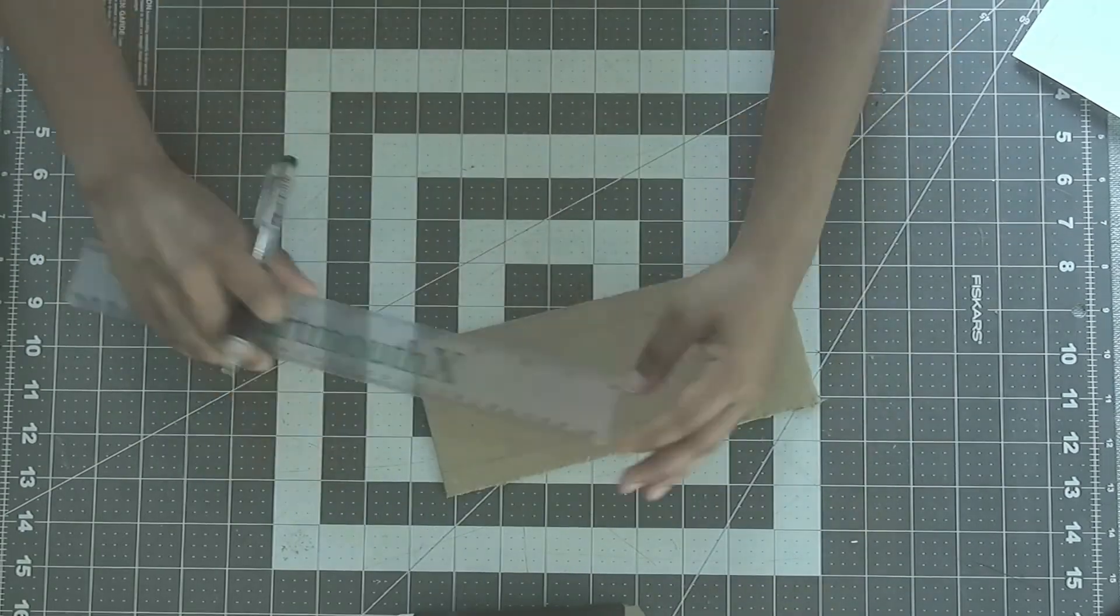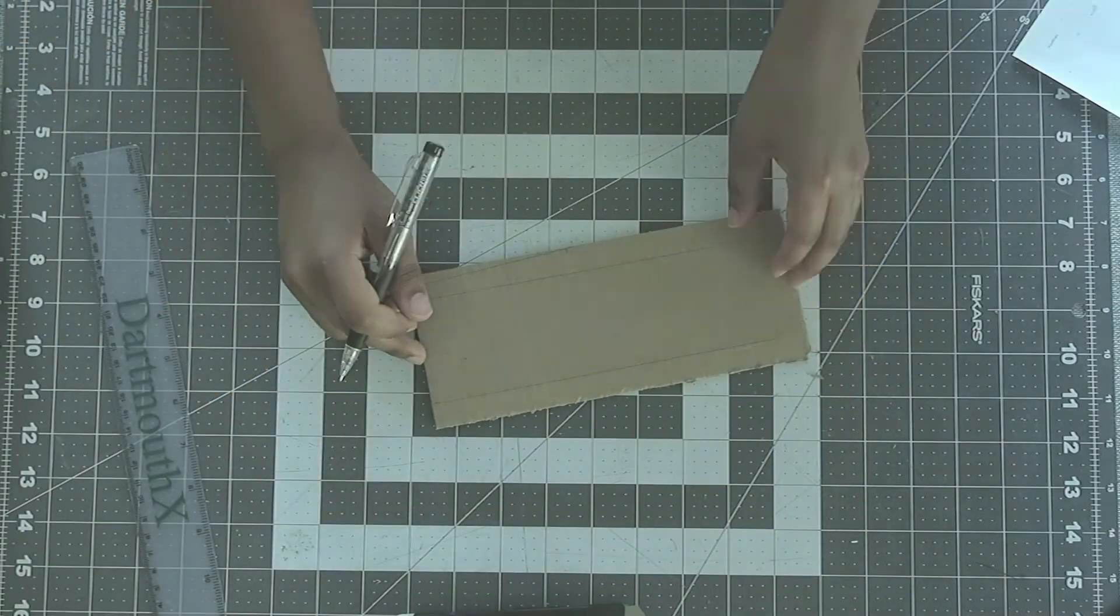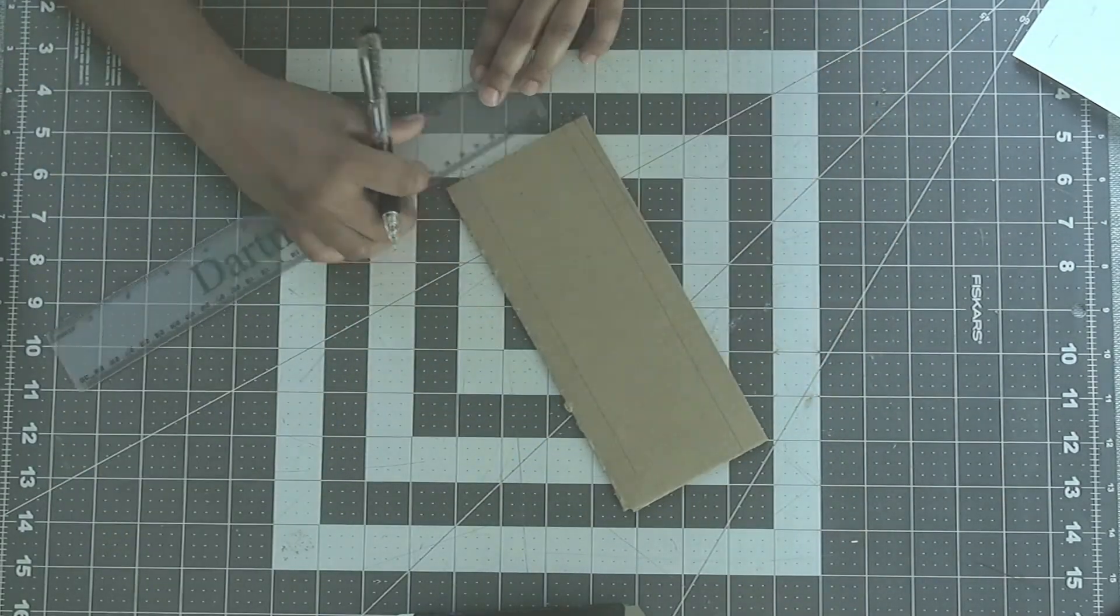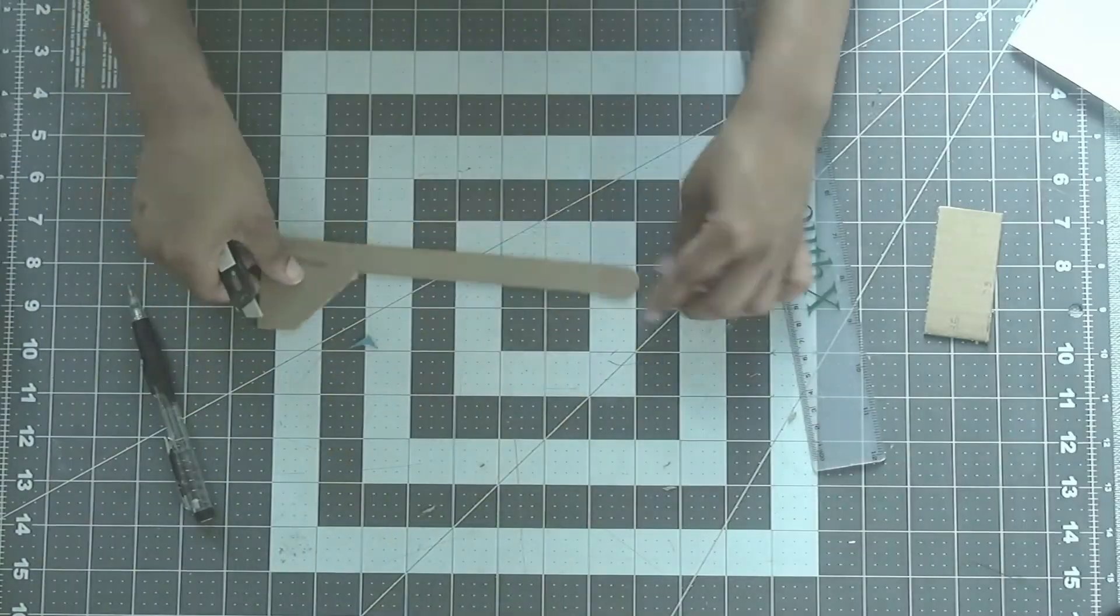Additionally, you could print out the template and cut the figures out individually by taping them to a piece of cardboard. Then trace around them and cut your cardboard parts that way.